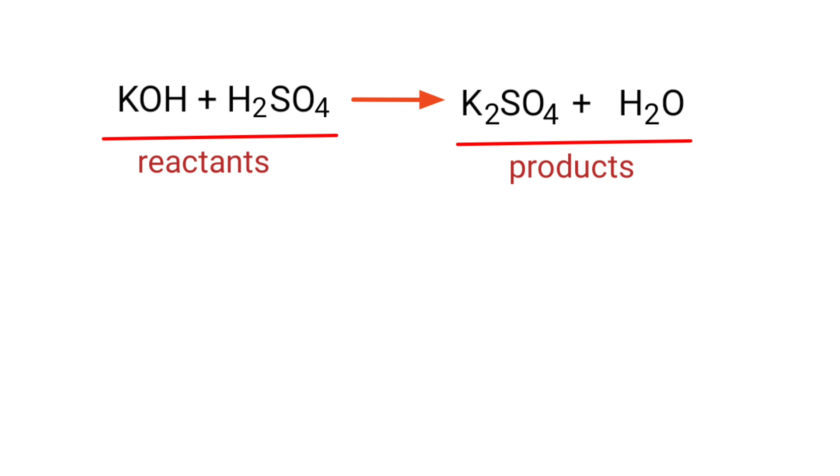In this equation, the reactants are potassium hydroxide and sulfuric acid and the products are potassium sulfate and water.